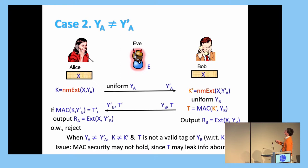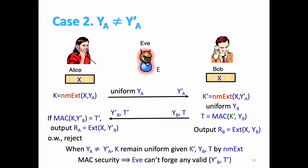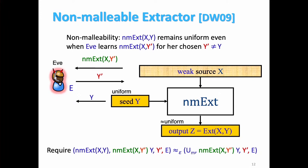What about Eve changing Y_A to Y'_A? Well, now we have some problems. So we have some K' here that might depend on K, but it's different from K. And so those two MACs have different keys that might be related to each other, and the MAC actually cannot guarantee security in this case. That's why we need non-malleable extractor.